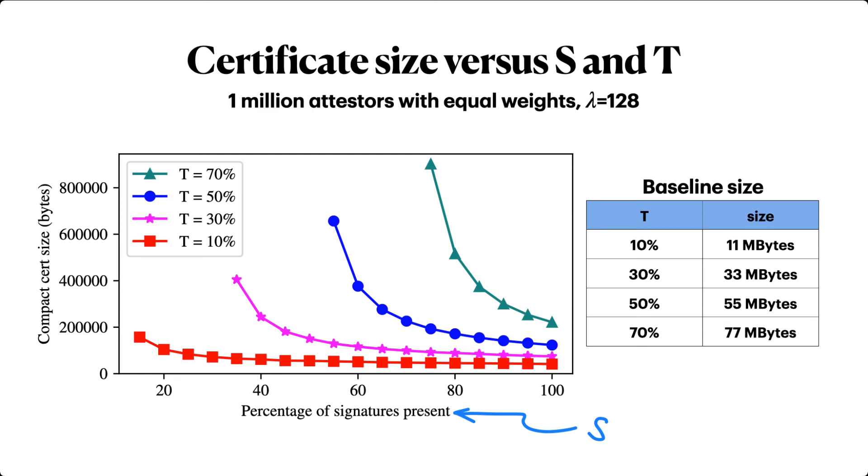Concretely, certificate sizes range from under 100 kilobytes to roughly 900 kilobytes for target weights ranging from 10 to 70 percent and total signed weights ranging from 5 percent greater than the target weight to 100 percent, i.e. all attesters signing.